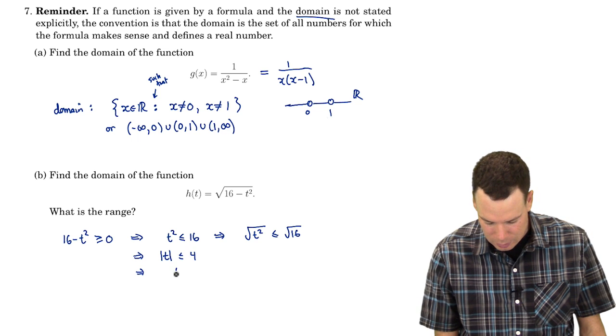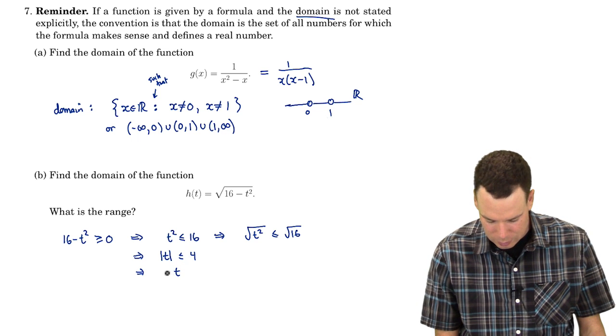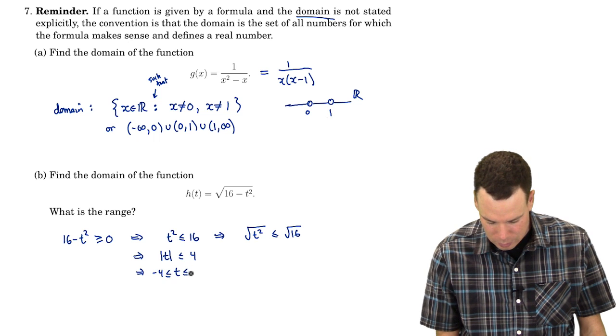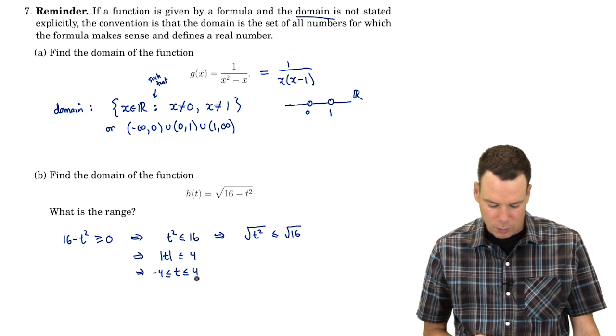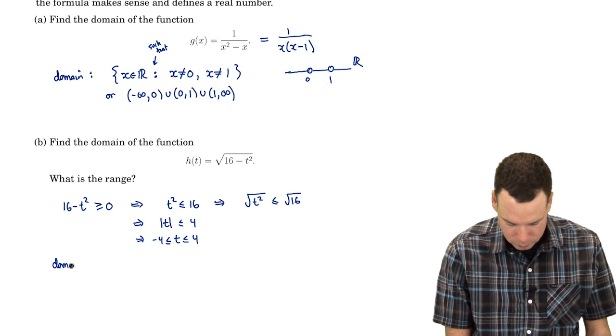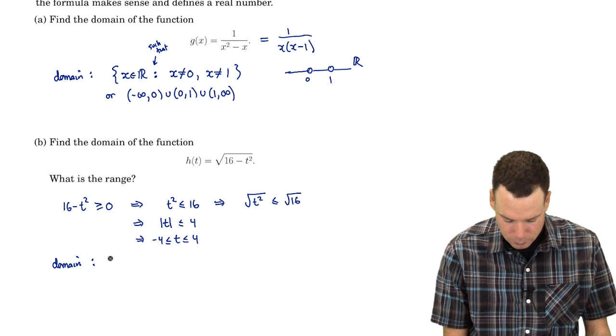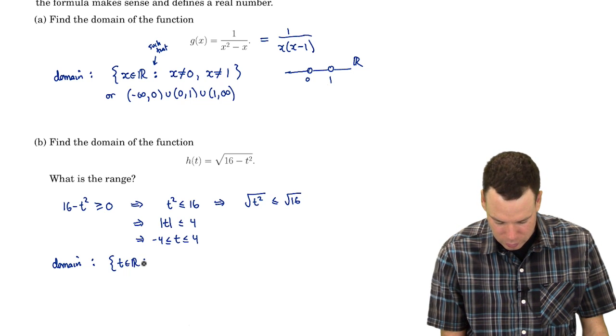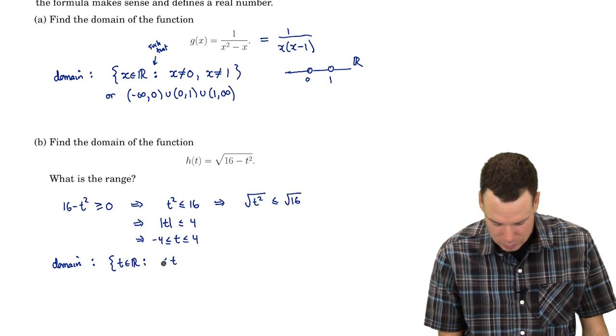So the absolute value of t is less than or equal to 4, which means t is trapped between -4 and 4. Our domain is the set of all t in the real numbers such that t is between -4 and 4.